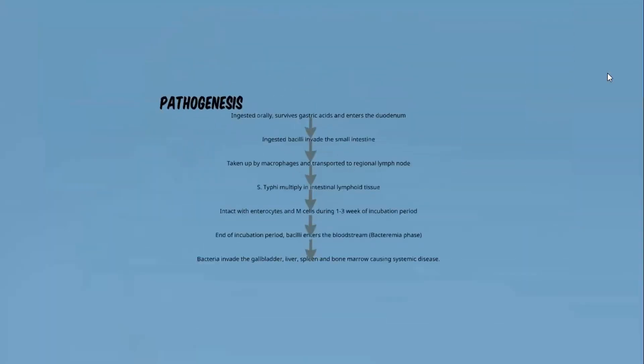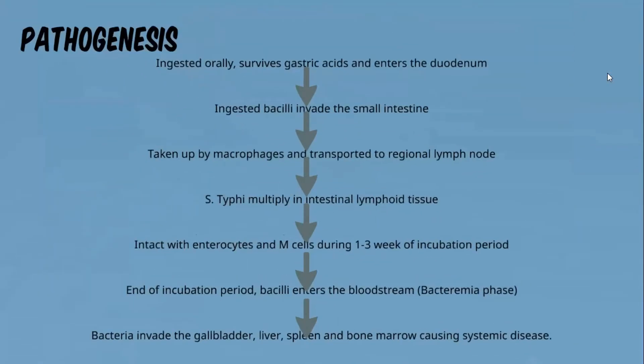The pathogenesis of typhoid fever begins when bacteria are ingested orally. They survive gastric acids due to their acid tolerance, which allows safe passage through the stomach. The bacteria then enter the duodenum, the first part of the small intestine. The ingested bacilli invade the small intestine, are taken up by macrophages, and transported to the regional lymph nodes.